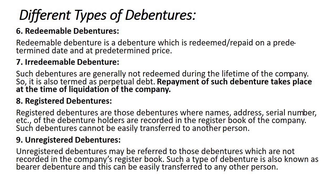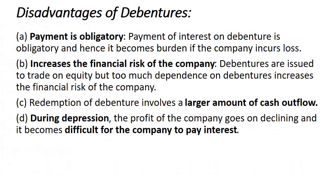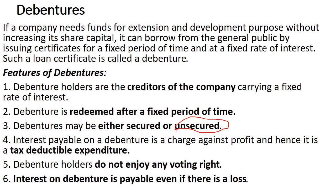In summary, debentures are loan certificates issued by the company to the public. Whoever buys them gives money to the organization for a specific period of time in return for a fixed rate of interest. Debenture holders are not the owners of the company and have no decision-making authority. In the next class, we will discuss short-term credit.